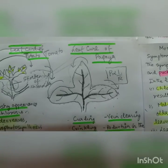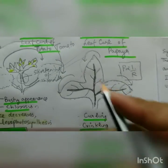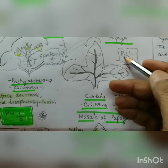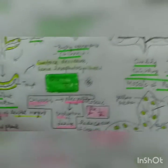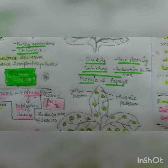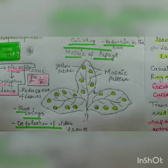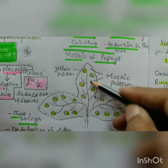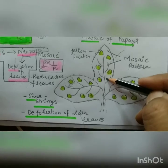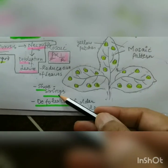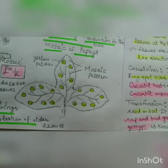To finish and revise: leaf curl of papaya — curling, thickening of veins, crinkling noise, reduction in size, photosynthesis decreases, respiration increases, chlorosis followed by necrosis, defoliation and death of plant, stunted growth. Mosaic of papaya — photosynthesis area decreases because of yellow-green-yellow mosaic or mottling, reduction in size of leaves like shoestrings, then defoliation, no flowers or small deformed flowers and fruits.